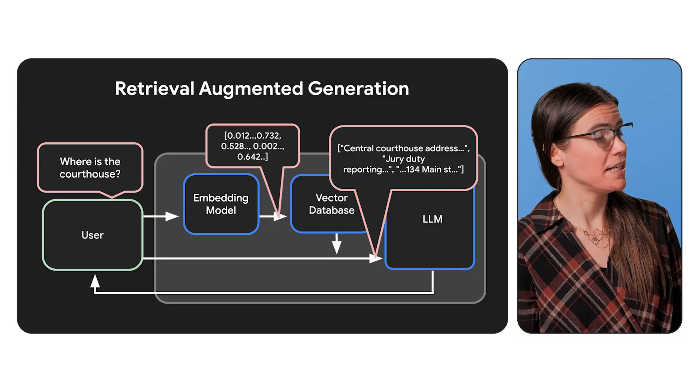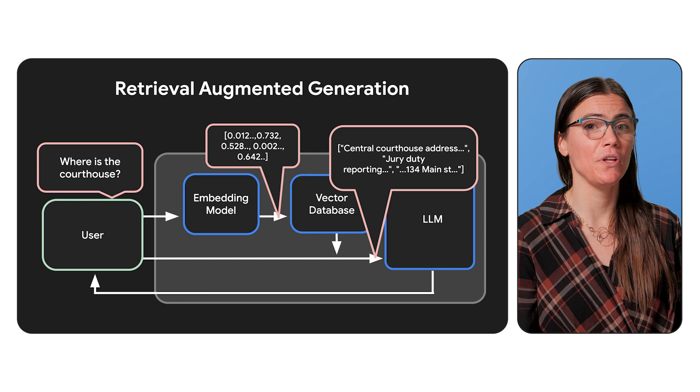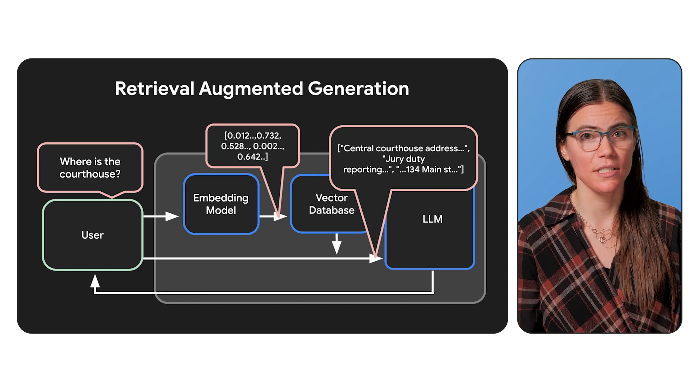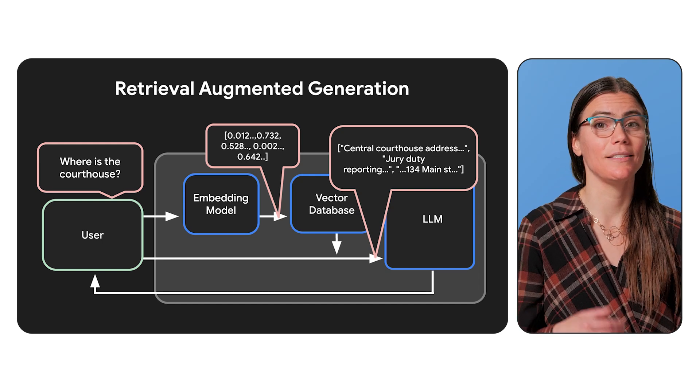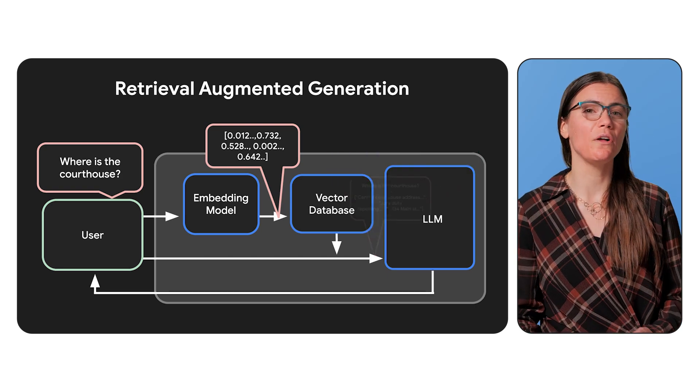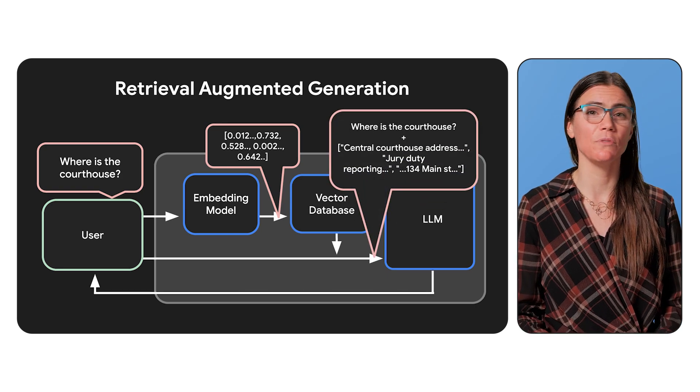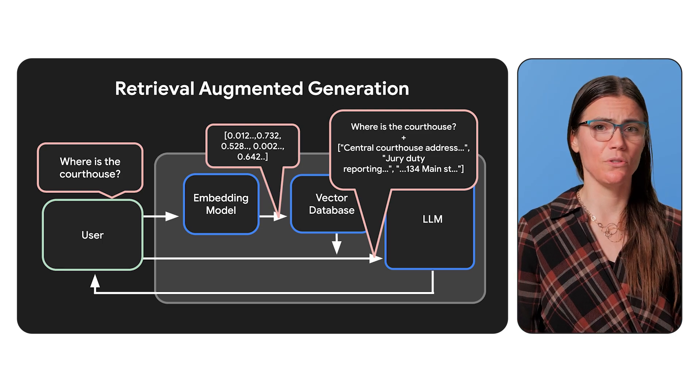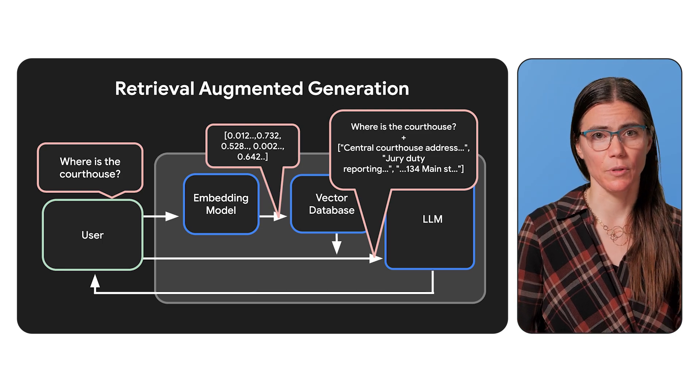Exactly. Now, once we've found that related info, we're going to add it to the original prompt, augmenting what the user gave us. That's the A in RAG. Usually, you'll also add some text to tell the LLM what to do with that related data. For example, base your answer to the user's question on the following documents.